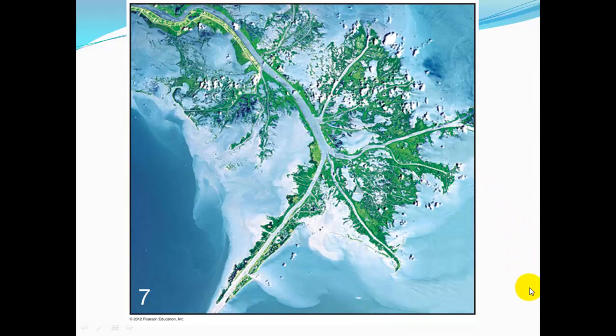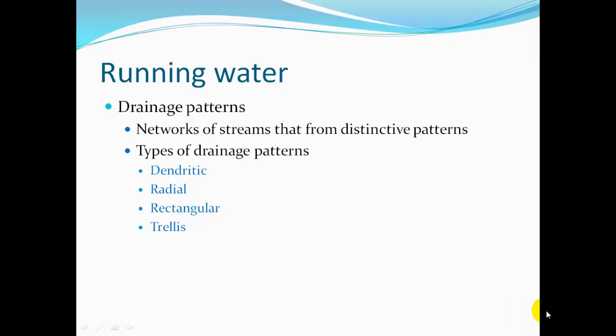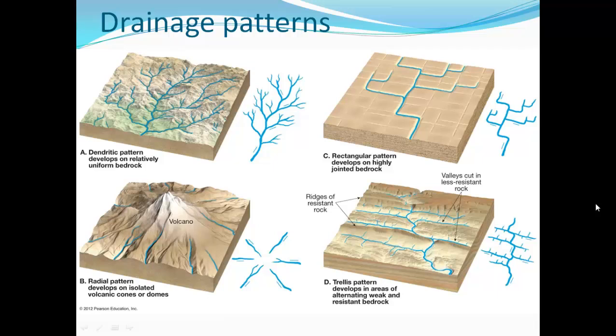There's the modern-day Mississippi Delta. Now, running water — as streams and rivers cut, they form different patterns depending on the bedrock underneath them. Some types of drainage patterns we know of are dendritic, radial, rectangular, and trellis.